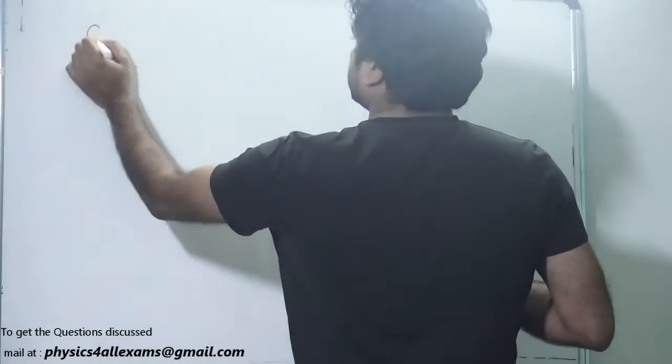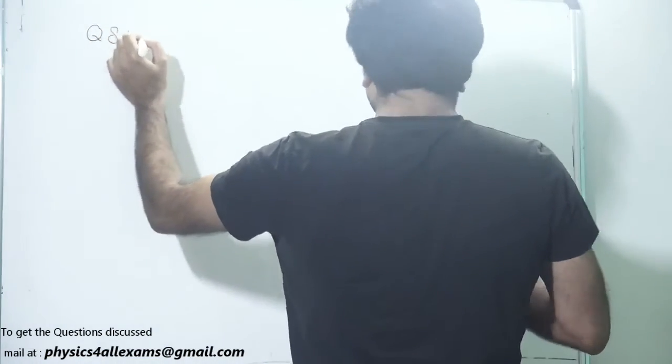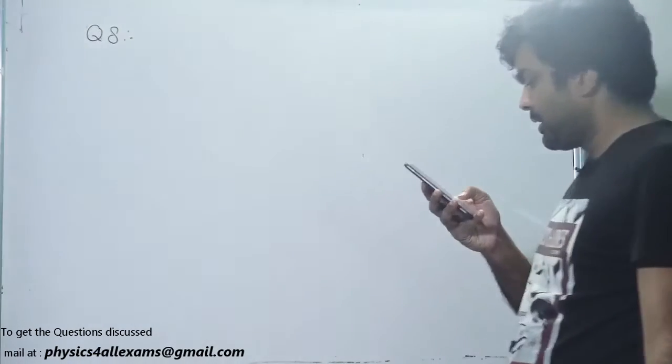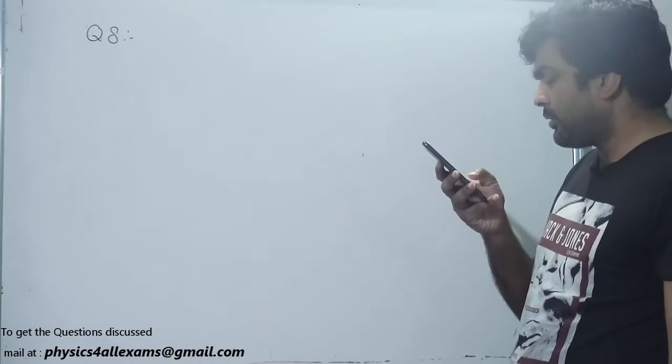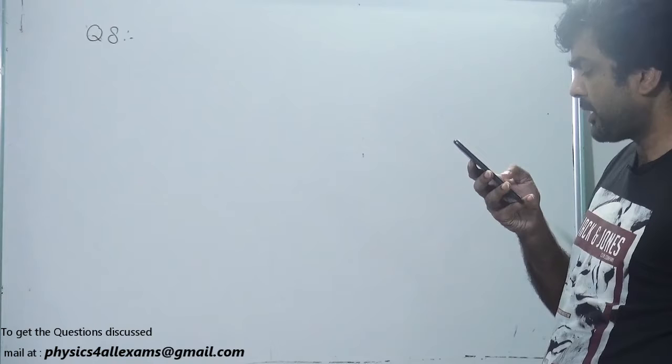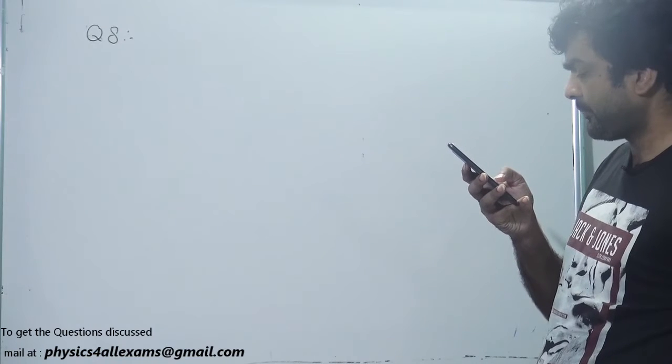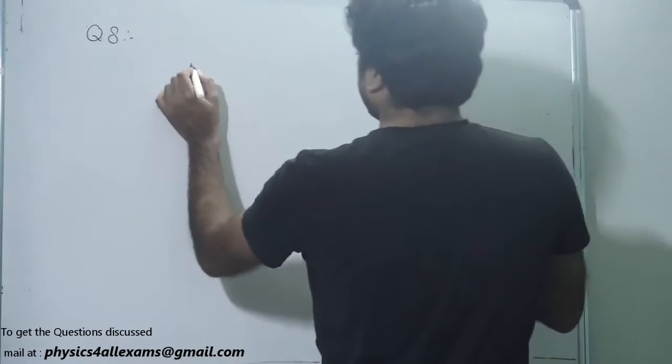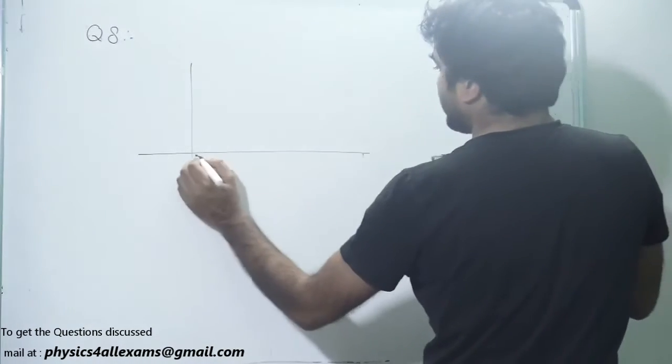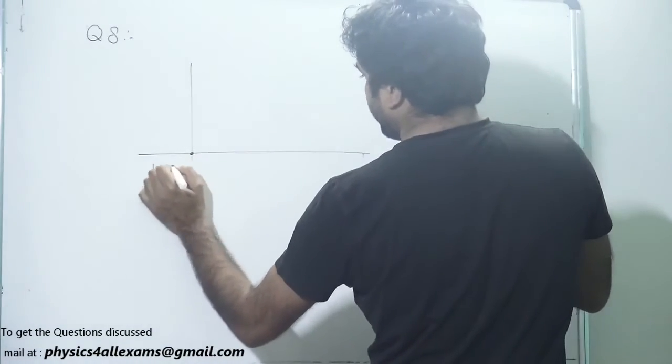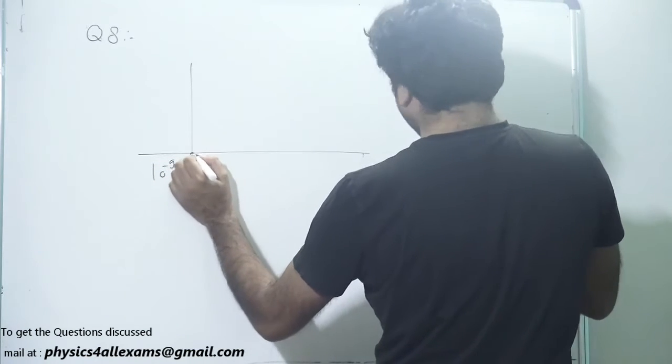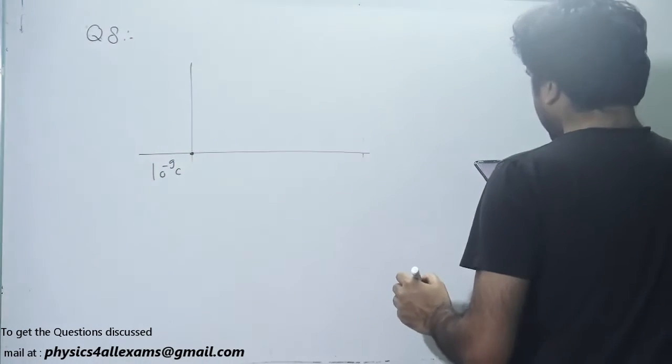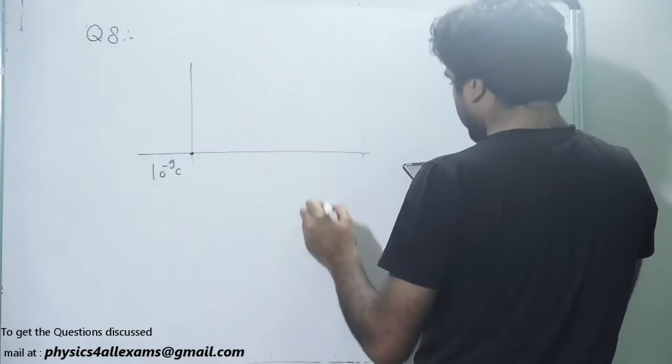Question number 8 is: a charge 10^-9 coulomb is located at the origin in free space and another charge Q. So one charge 10^-9 coulomb is located at origin and another charge Q.